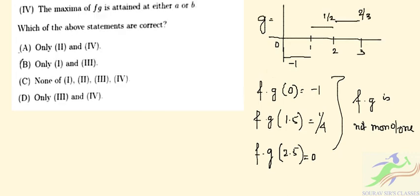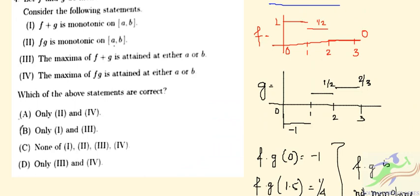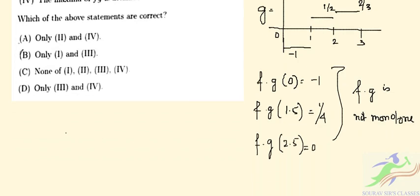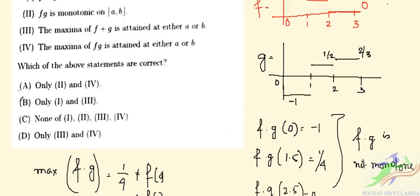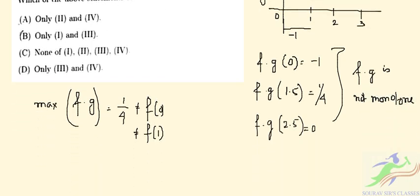From the options, statement 2 — that f·g is monotonic on the closed interval [a, b] — is false. Also, since the maximum value of f·g, which is 1/4, is attained at 1.5 and is not equal to f·g(0) or f·g(1), statement 4 — that the maximum of f·g is attained at either a or b — is also false. So statements 2 and 4 are false.